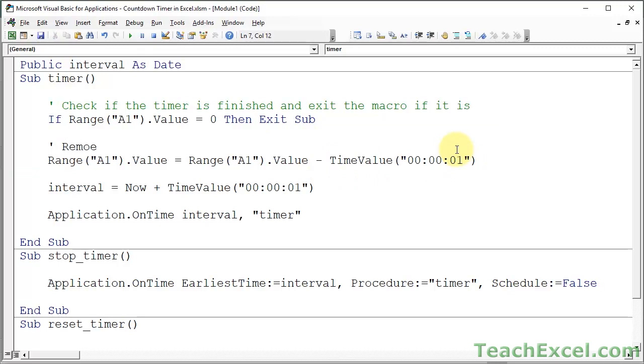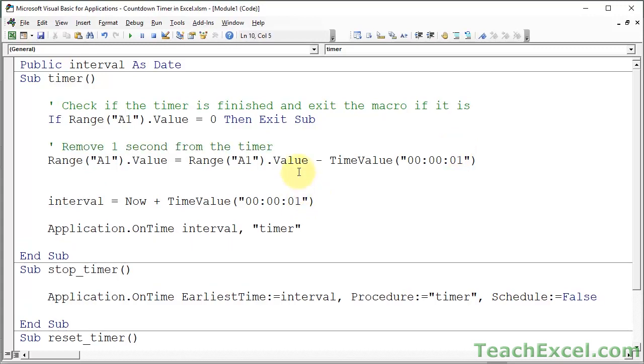so remove one second from the timer. The next thing is what controls how often this macro runs. Because this particular macro, the timer macro, actually runs on a loop.